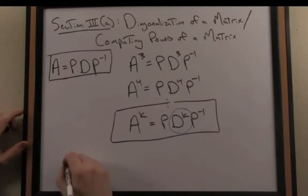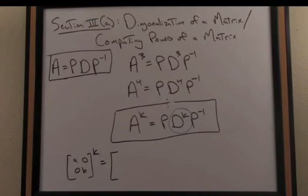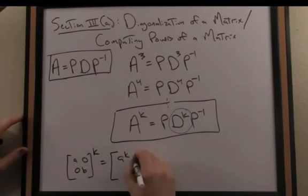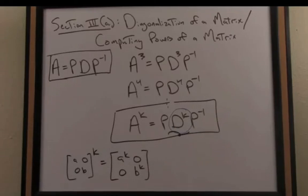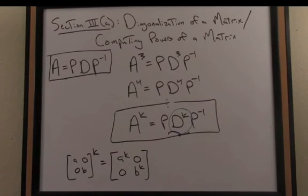As it turns out, to raise a diagonal matrix to a power, for instance a matrix with a and b on the diagonal and zeros elsewhere, if I want to raise this to the K power, that's actually equivalent through matrix multiplication to just raising each component along the diagonal to the Kth power. So in short, it isn't very taxing to raise a diagonal matrix to a high power, much better than doing these many tedious computations for A.